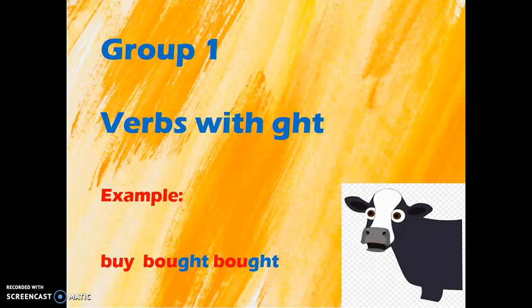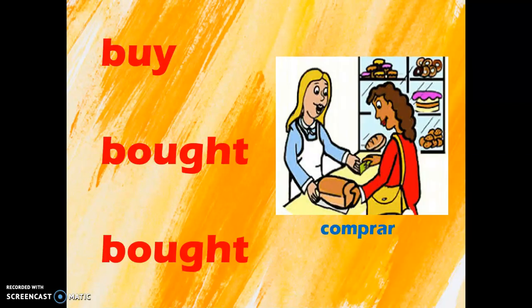Let's take a look at the verbs that are part of group number one. Buy, bought, bought. The woman from the picture is buying some bread.